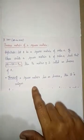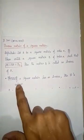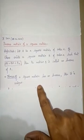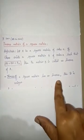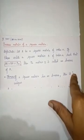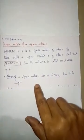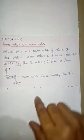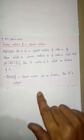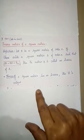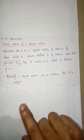The first theorem: if a square matrix has an inverse, then it is unique. That means one square matrix has only one inverse.